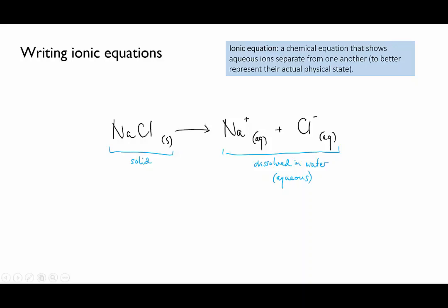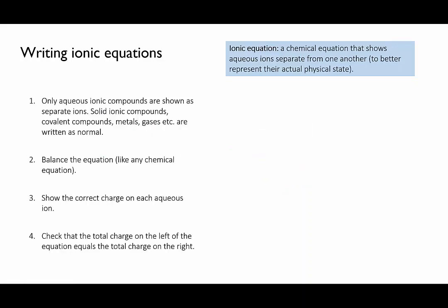When you're writing ionic equations, there are a couple of things to remember. I'll run through them using magnesium bromide as an example. First, only substances that have separated into ions when they dissolved in water are written as separate ions. All other compounds are written as normal. That includes solid ionic compounds, undissolved or precipitated, covalent compounds, metals, and gases.